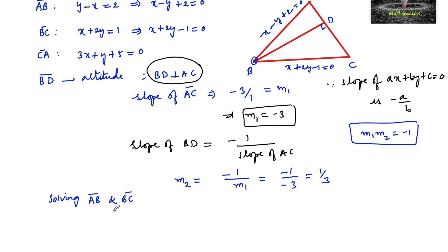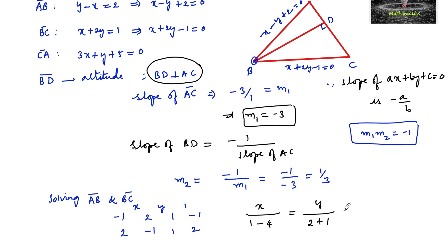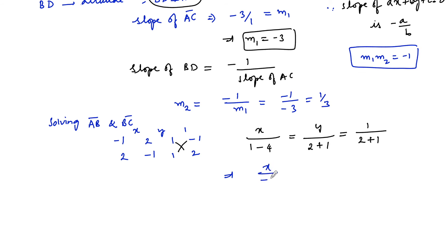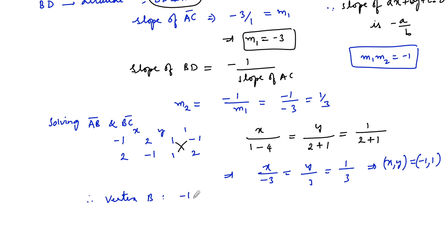Solving AB and BC by cross multiplication, we get x upon negative 1 times negative 1 minus 2 times 2, equals y upon 2 times 1 minus negative 1 times 1, equals 1 upon 1 times 2 minus negative 1 times 1. This gives x upon negative 3 equals y upon 3 equals 1 upon 3. So x equals negative 1 and y equals 1. Therefore, the coordinates of vertex B are minus 1 comma 1.